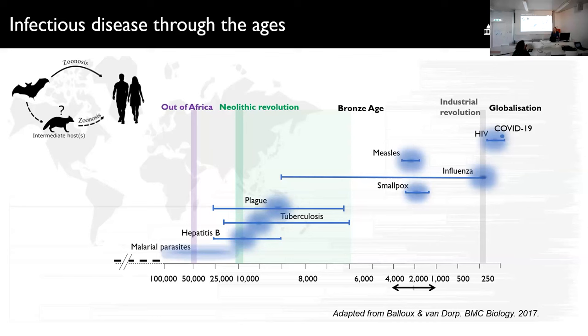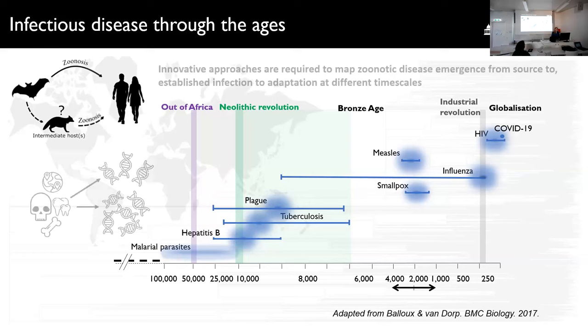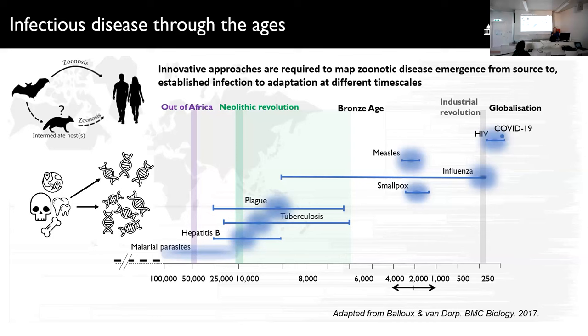Some diseases are thought to be very ancient — malarial parasites, hepatitis B, tuberculosis, and plague — whereas others are far more recent, with HIV and COVID-19 being striking examples. The confidence intervals around these events are enormous, and there are major uncertainties about how long some of our major human pathogens have been infecting humans, and what those original animal reservoirs were. This is despite having thousands of modern genomes for pathogens like malaria, influenza, and HIV, which argues that innovative approaches are required to map zoonotic disease emergence at different timescales.